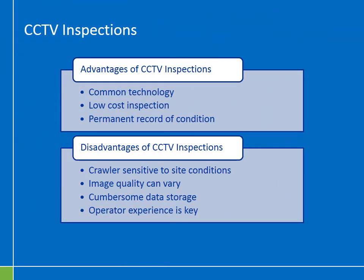An advantage of CCTV technology is that it's very common, so wherever you are in the state you can find a specialty contractor who can provide this type of inspection. CCTV is also low cost relative to the amount of video data you receive — one to three dollars contracted per foot for permanent video documentation. This is a permanent record of culvert condition: you can archive the video files and pull them up in the future. For example, if you did a CCTV inspection immediately after installation of a new culvert, you'd always have video documentation of what that culvert looked like at day one, which is very valuable for understanding the rate of degradation over time.